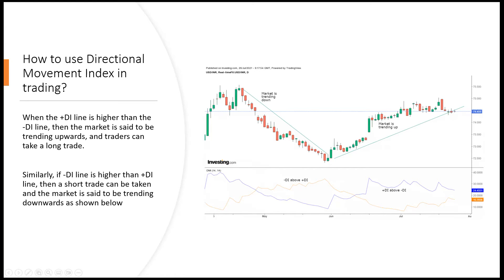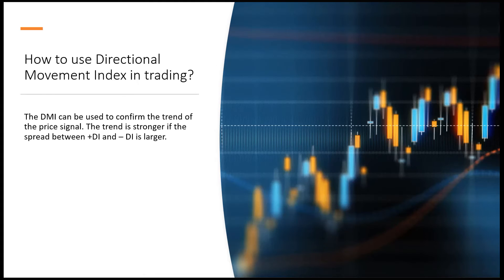We can see on the chart that the DI line crossed here and moved above the DI plus line, showing the initiation of a downtrend, and then the opposite showing the initiation of an uptrend. Its formula is quite different — it's not the same as saying you have a crossover strategy like MACD, because it's using different formulas to make these lines.